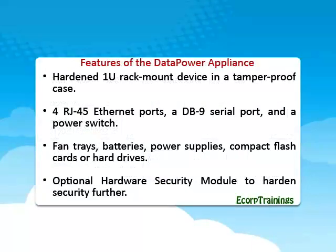Data Power Appliances have some special features like a hardened 1U rack-mount device in a tamper-proof case, 4 RJ45 Ethernet ports, a DB9 serial port, and a power switch. Fan trays, batteries, power supplies, compact flash cards or hard drives. There is also an optional hardware security module to harden security further.